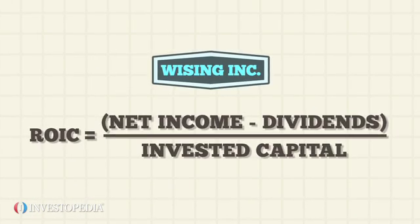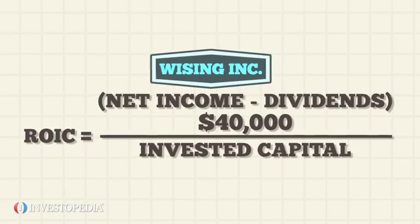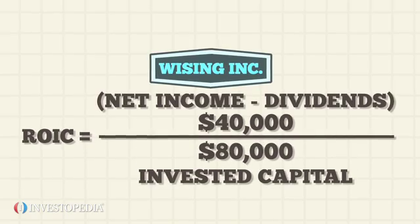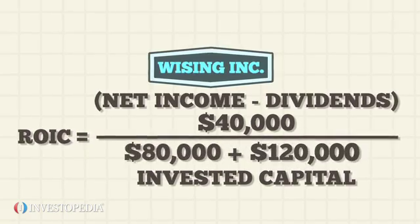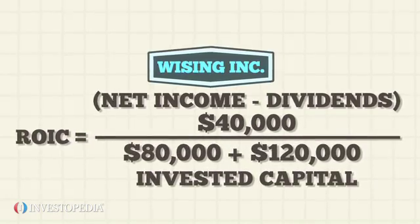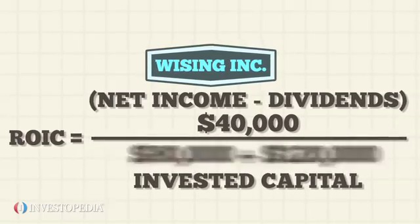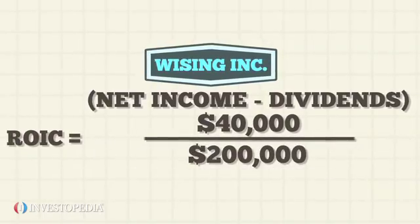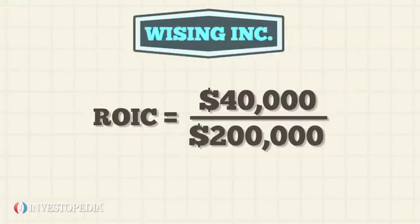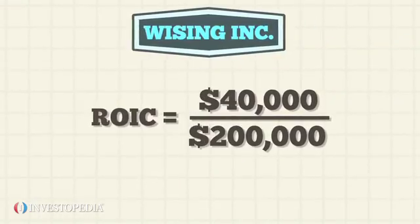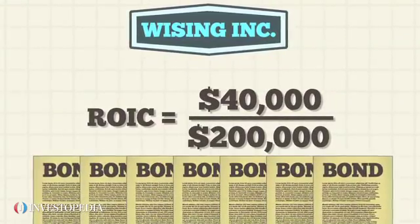Wising Inc. reports annual net income of $40,000 in a given year. If it has $80,000 in total debt and $120,000 in shareholder equity, its total capital is $200,000. Assuming Wising pays no dividends and all its debt is funded through corporate bonds issued to investors,